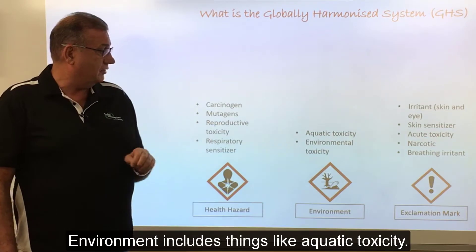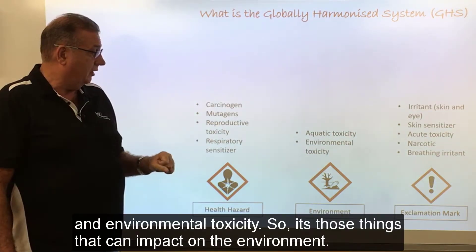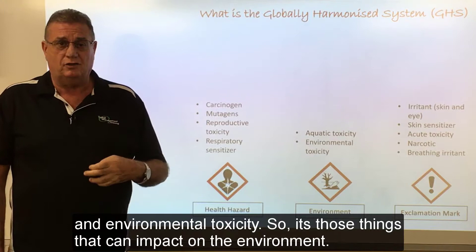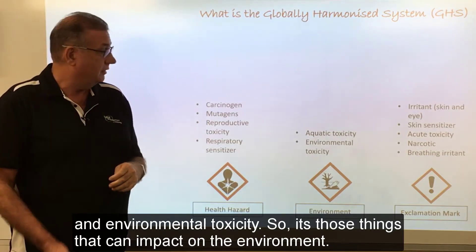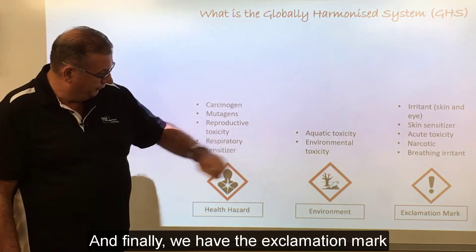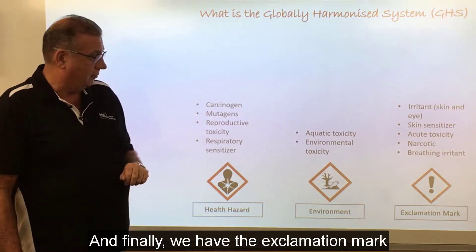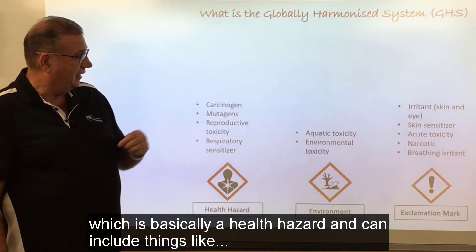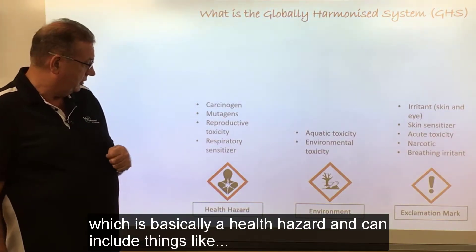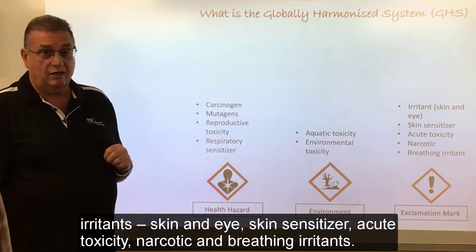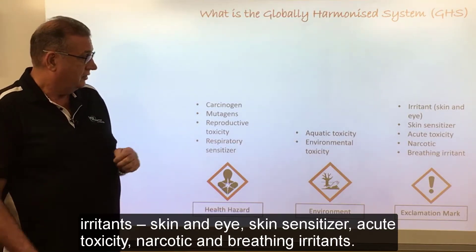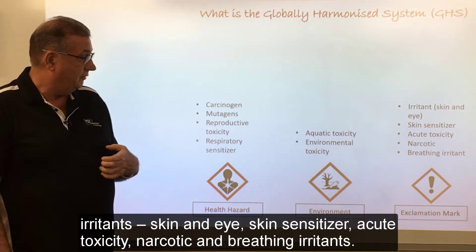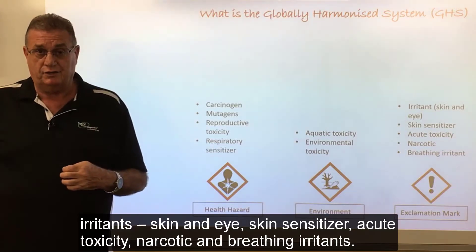The environment pictogram includes things like aquatic toxicity and environmental toxicity — those things that can impact on the environment. Finally, we have the exclamation mark, which covers general health hazards including irritants to skin and eye, skin sensitizers, acute toxicity, narcotics, and breathing irritants.